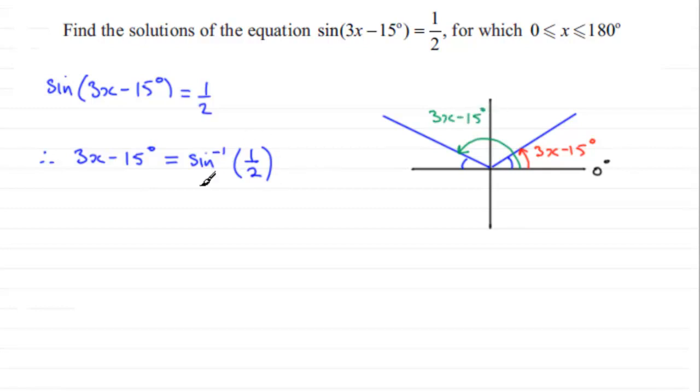Now when you take the inverse sine of a half, you'll find you get 30°. So therefore, 3x - 15° = 30°. And that's our first solution. That's this one in here. That's 30°.